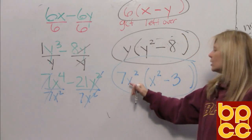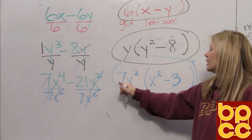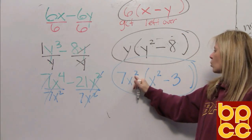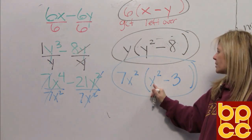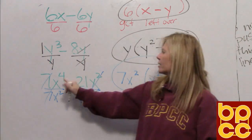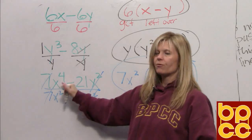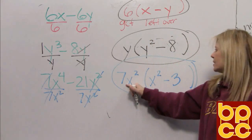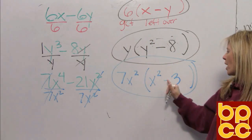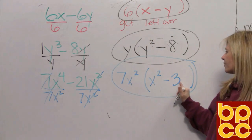Check it — distribute: 7x squared times x squared is 7x to the fourth, and 7x squared times negative 3 is negative 21x squared.